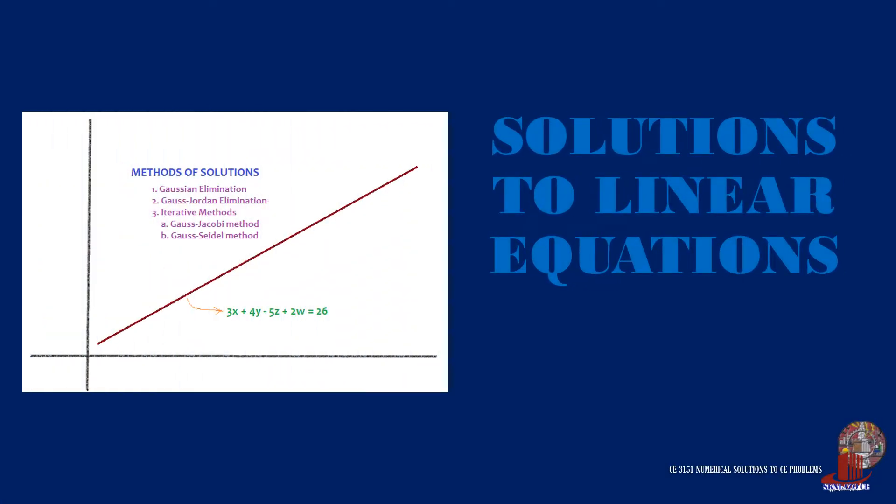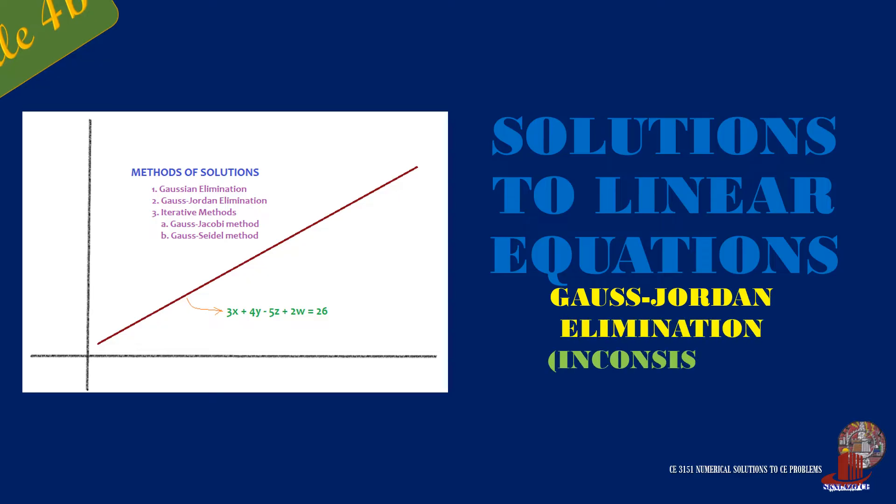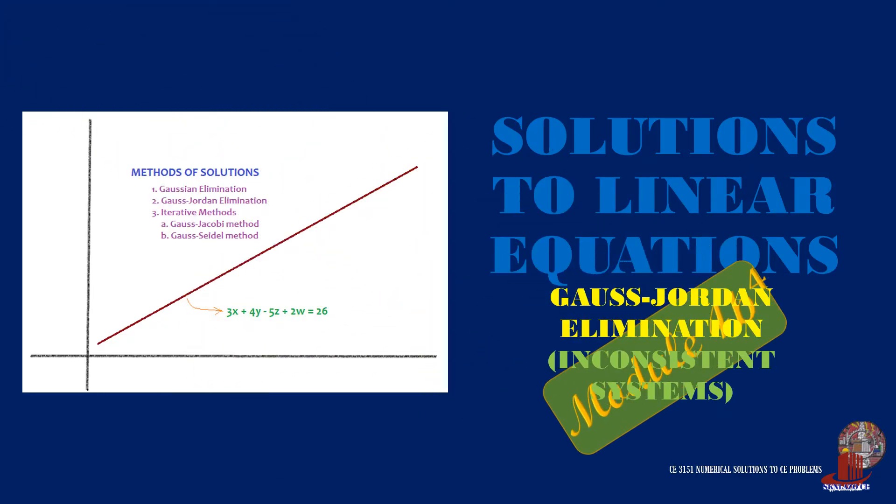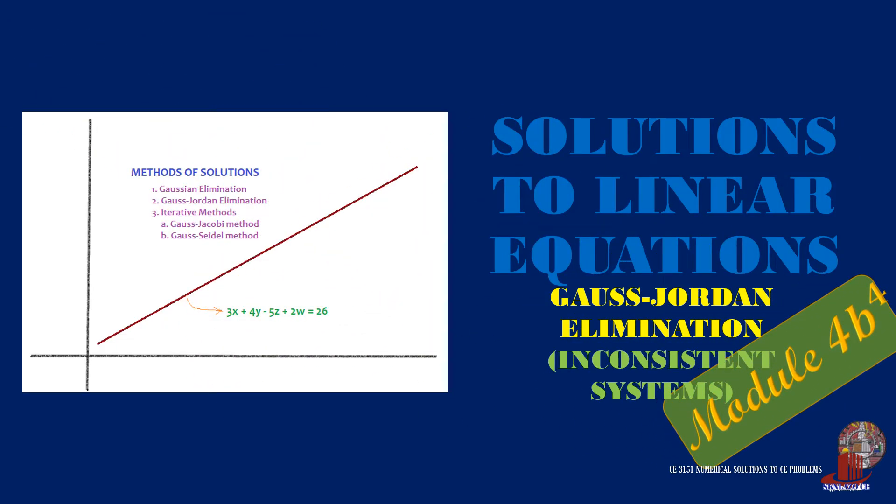Inconsistent systems can still be reduced by Gauss-Jordan elimination. Although there are no specific values for the variables, the solution can still be simplified to reduced row echelon form. Welcome to Numerical Solutions to CE Problems.